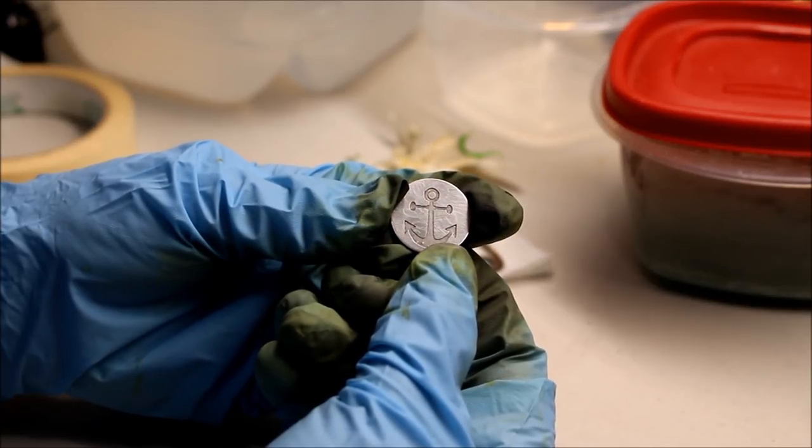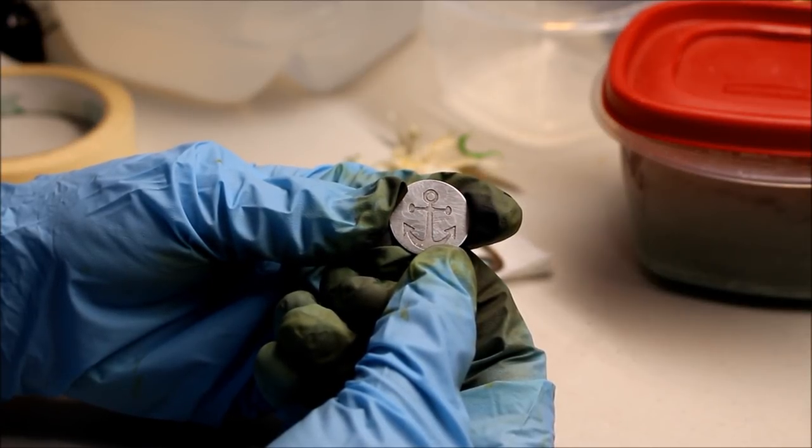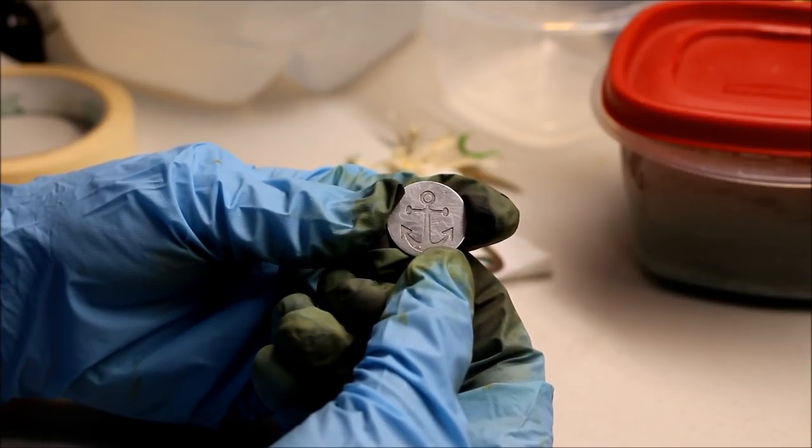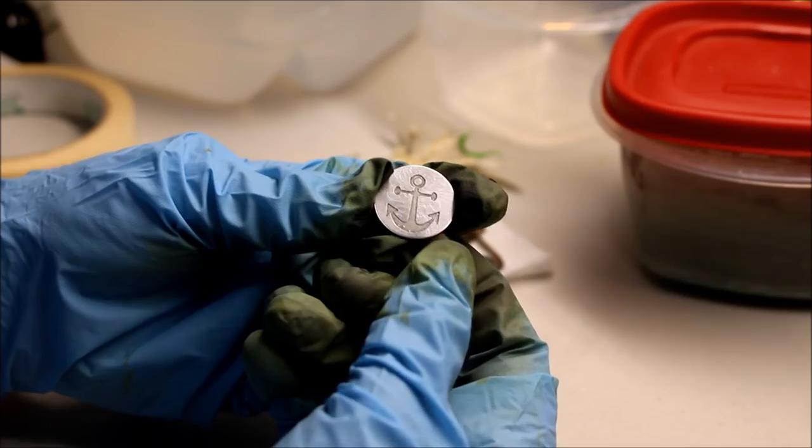You just clean it up like that. And then there you have an etched piece of aluminum. Once again, camera is not in focus. And there you go - there's your etched piece of aluminum with an anchor on it. Easy peasy lemon squeezy. If you have any questions, just let me know. Thank you.